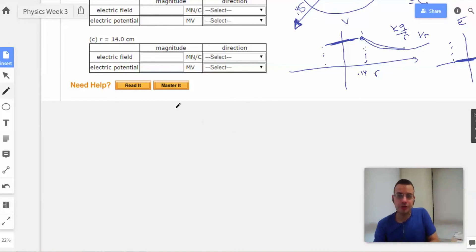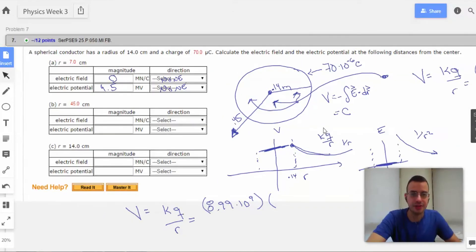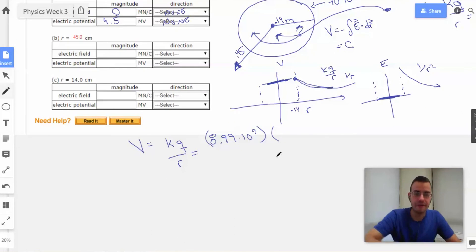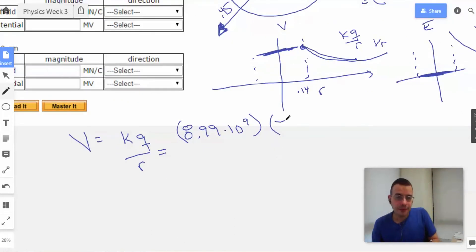So the voltage will be KQ over R, which is 8.99 times 10 to the 9th times, they give us a value here, I just forgot it, 70 times 10 to the negative 6 over 45 times 10 to the negative 2.